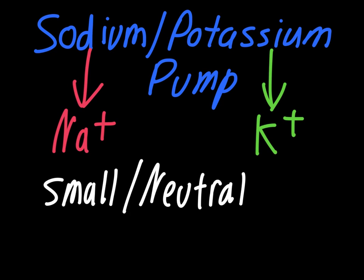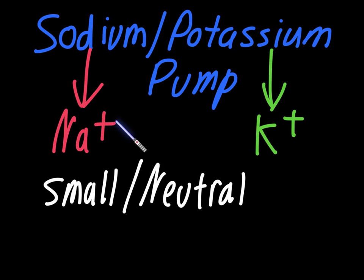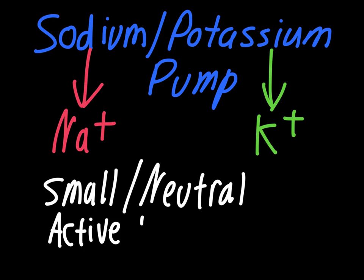Both sodium and potassium are single atoms of an element, so they are very small things in terms of the cell, but they are not neutral. Since they have that plus charge, they are charged particles and cannot move in and out of the cell on their own. So they need to go through the process of active transport in order to get in and out of the cell.